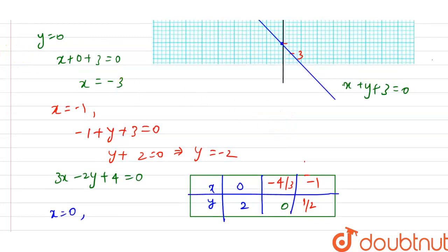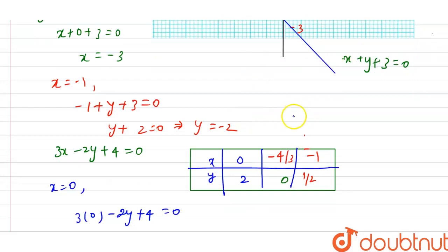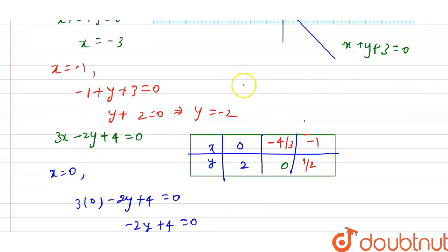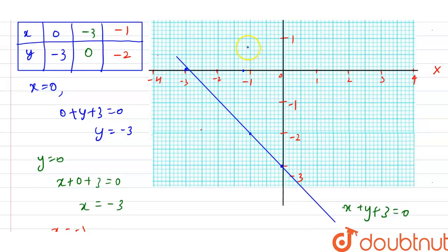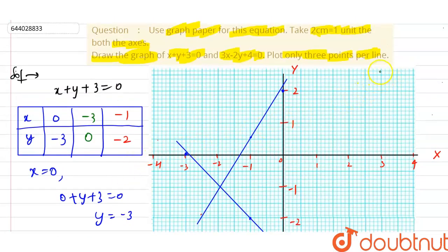Now I'm going to place these points on the graph. The first point (0, 2) is plotted here. The second point (-4/3, 0) — that's about -1.3 — is plotted here. And the third point (-1, 1/2) is plotted here. Joining them gives the line for 3x - 2y + 4 = 0. This is the correct graph for the given equations, each made using only three points.